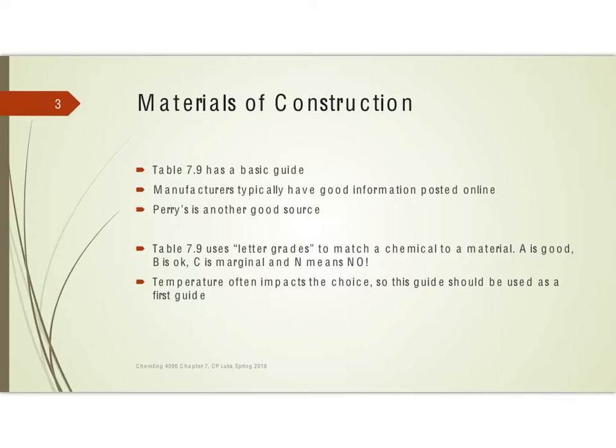The table in your book is much like any other table — they all use a variation on this. Basically they use letter grades: A is good, B is okay, C is getting pretty marginal, and N just means no. This table does not include temperature information, and temperature frequently impacts the choice. So this is just a first guide, but it's a good place to start.